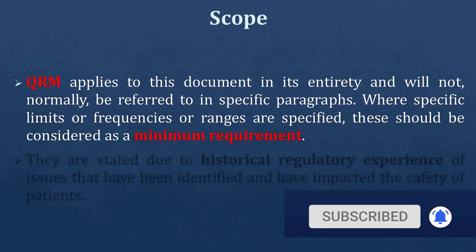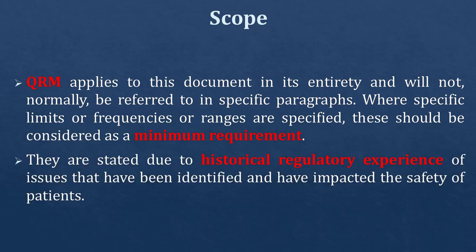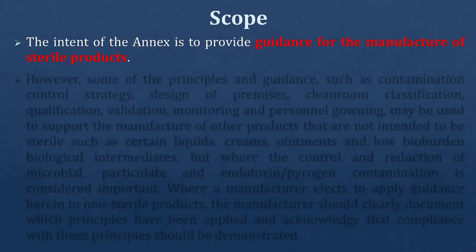Generally, in guidance documents, the specifications or limits described are the minimum requirements of the guidance or regulators. They are stated due to historical regulatory experience of issues that have been identified and have impacted the safety of patients. The intent of Annex 1 is to provide guidance for the manufacture of sterile products.